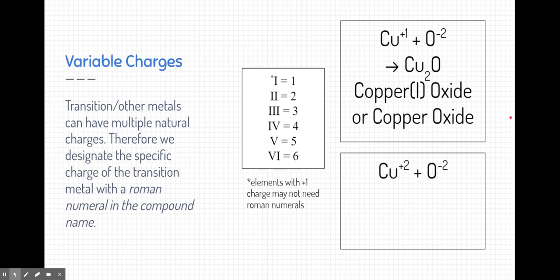Let's take a look at a different example. This copper has a different charge. It's a positive 2 charge. Remember, transition metals and other metals can have variable charges. Oxygen is still a minus 2. It's always predictable to be that charge. So when these come together,